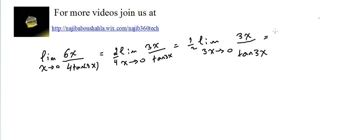Times one-half, the answer is one-half. Let me explain, because the rule says something else. The rule we have is: limit of sine(u) over u as u tends to 0. So let me show what the limit of tangent(3x) over 3x is as x approaches 0.